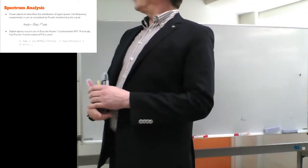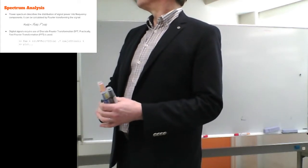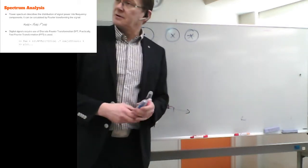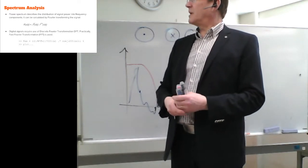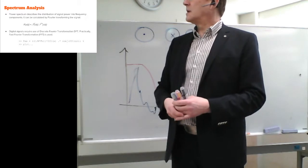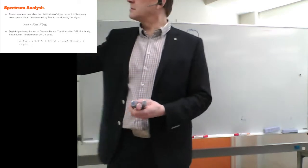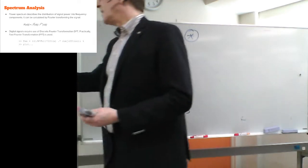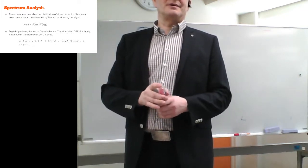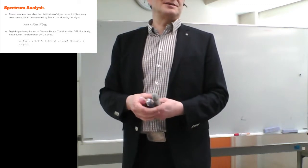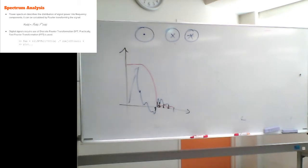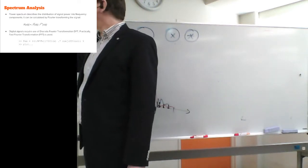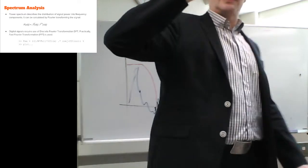Power spectrum shows the signal power at different frequency components. The easiest way to calculate it is using the Fourier transformation. For discrete-time signals we use the Discrete Fourier Transform, and if we have 2^n samples we can use the Fast Fourier Transform — FFT is just the fast way of calculating the DFT when you have a power-of-two number of samples.